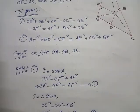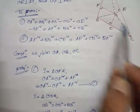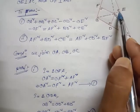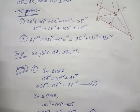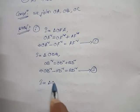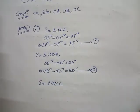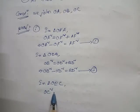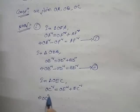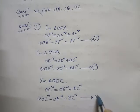Now the next one: in triangle OEC, OE is perpendicular on CE, so this is 90 degrees, which means OC is the hypotenuse. Therefore, OC² = OE² + EC², and rearranging: OC² − OE² = EC². This is equation number 3.